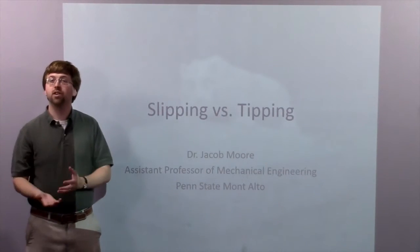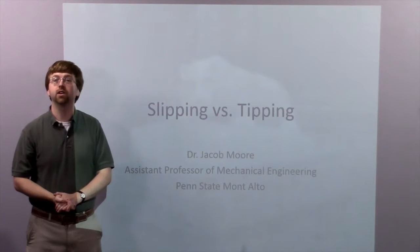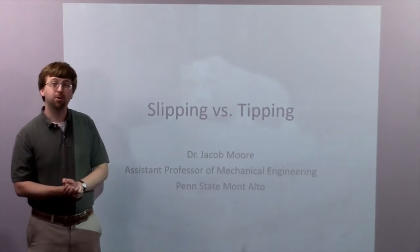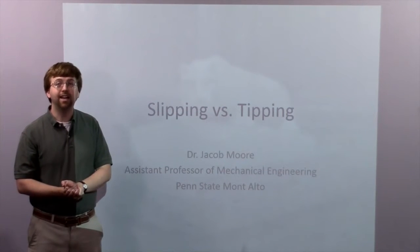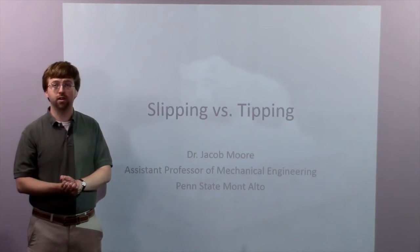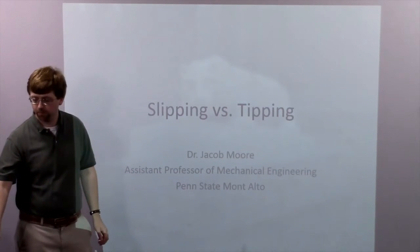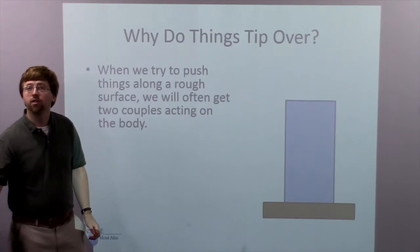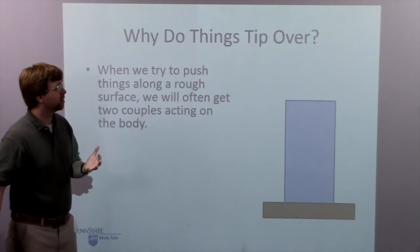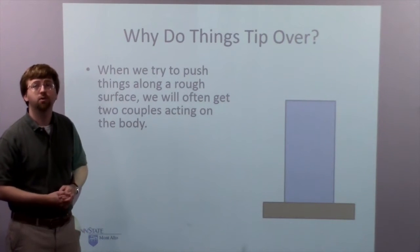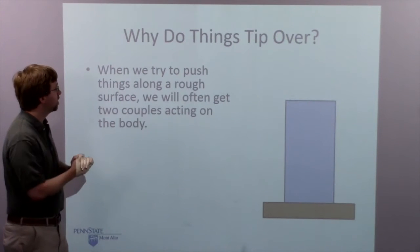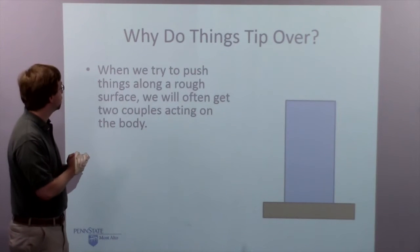So I want to figure out which of those two options is going to occur, and friction and couples are the key elements in deciding which of those two options is going to occur for any one situation. So why do things tip over? Sliding we kind of talked about with dry friction, but tipping over is a little bit new in terms of the friction chapter.